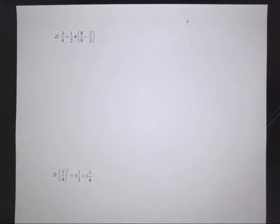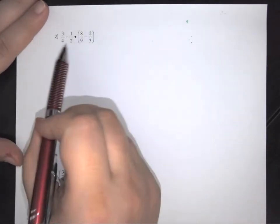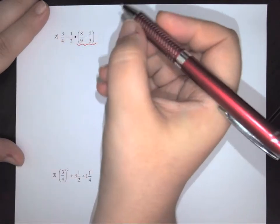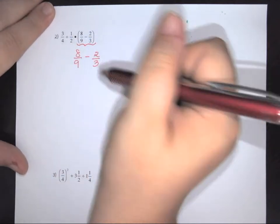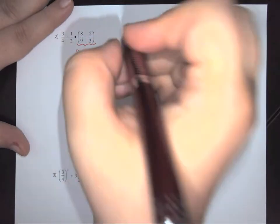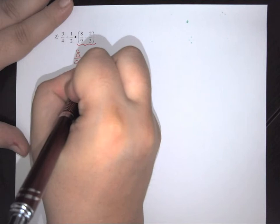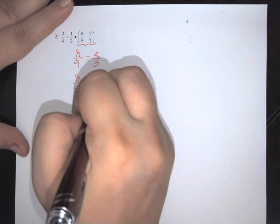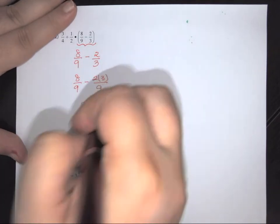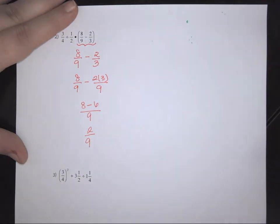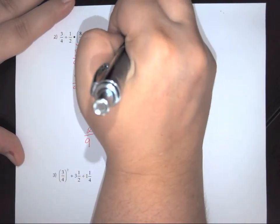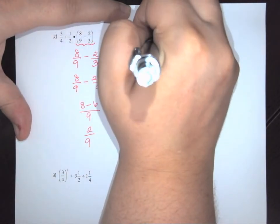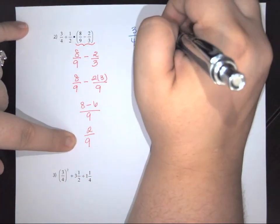Let's look at another one. Again I start with PEMDAS — do I have any parentheses? I do. So I have to do 8 over 9 minus 2 over 3 first. What's common between 9 and 3 is 9. So this becomes 8 over 9 minus 2 times 3 over 9, which is 8 minus 6 all over 9. That leaves me with 2 over 9. I rewrite my problem: 3/4 divided by 1/2 times the new simplified 2 over 9.